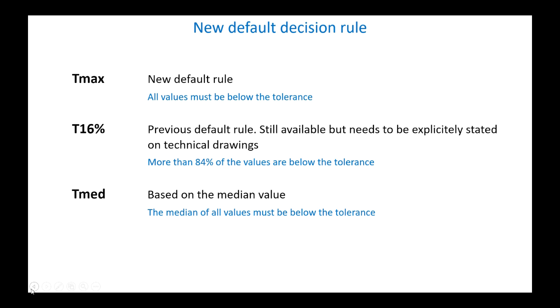A third change made to the decision rule has an impact on the interpretation of the results. Previously, the default decision rule was the so-called 16% rule. ISO 4288 specified that if one value out of six was out of tolerance, the part could nevertheless be accepted, possibly at the cost of additional measurements. This rule was seldom used and often misunderstood. The new standard now specifies that all measured values must be within tolerance. This is known as the max rule.